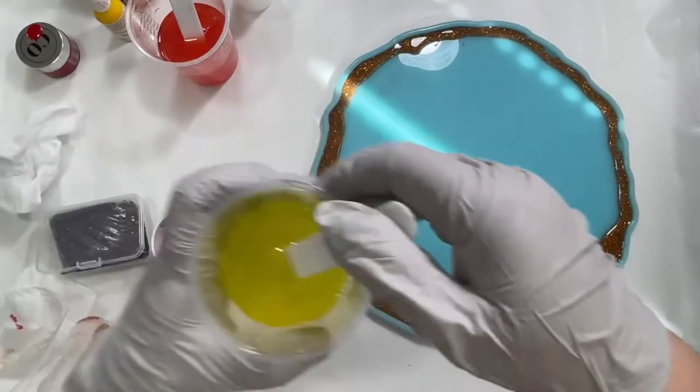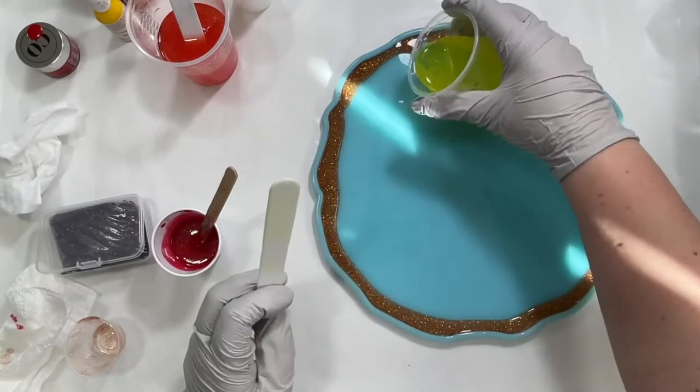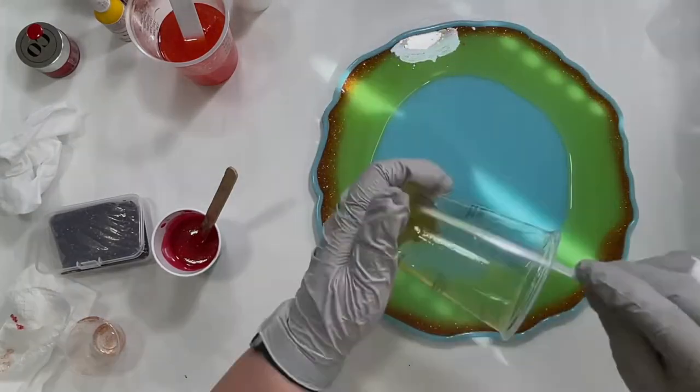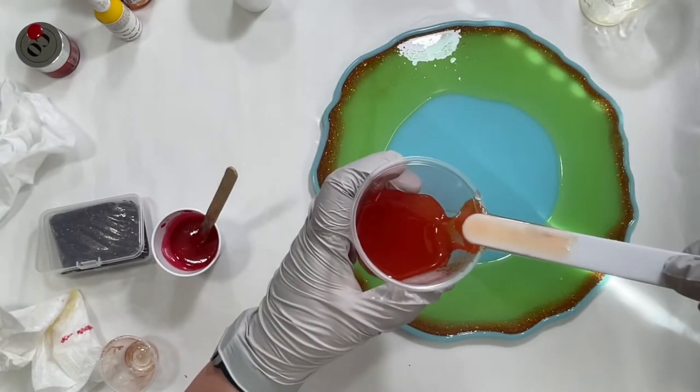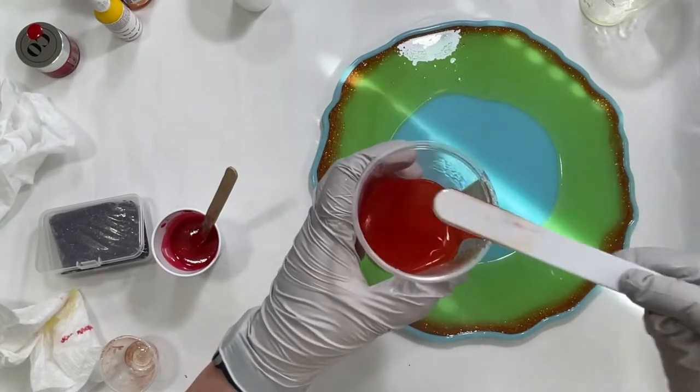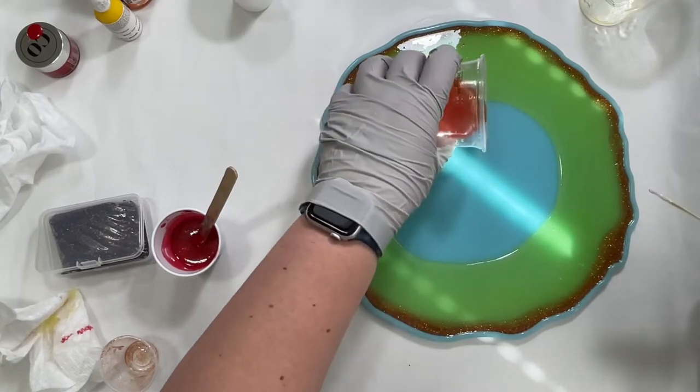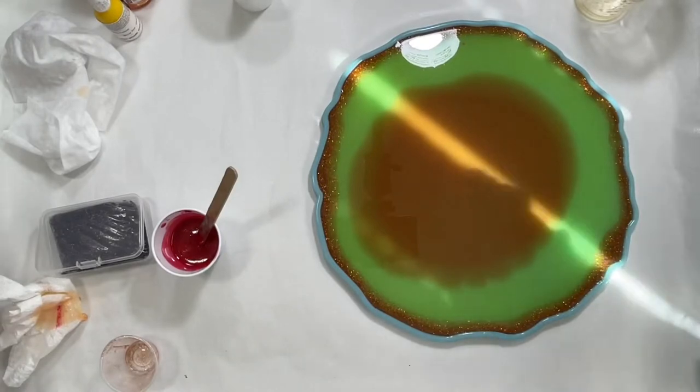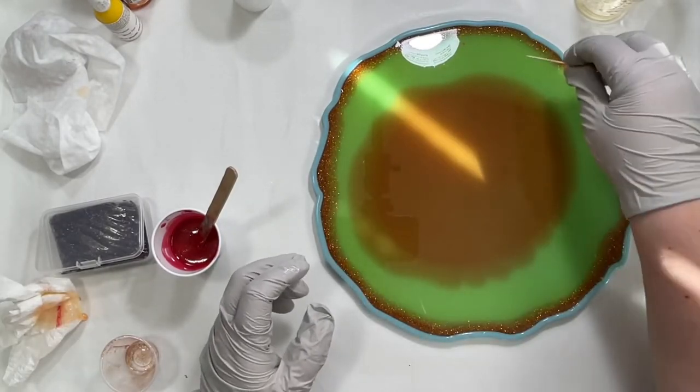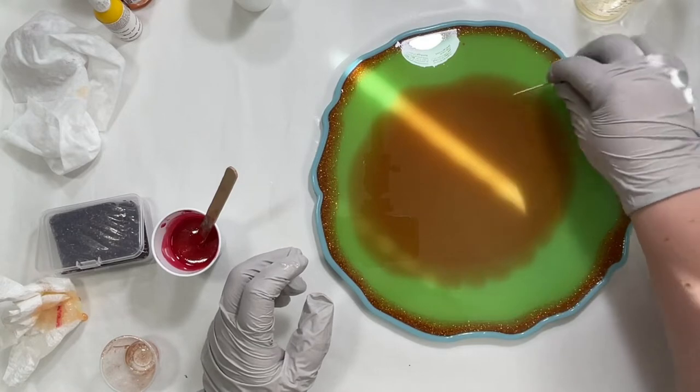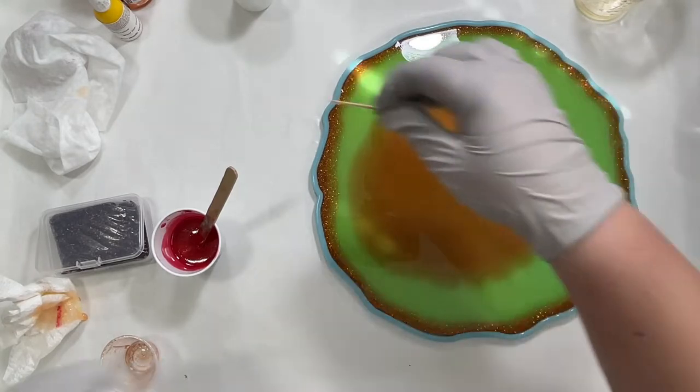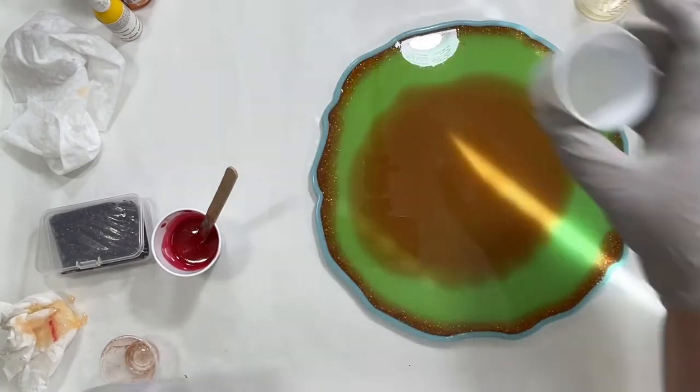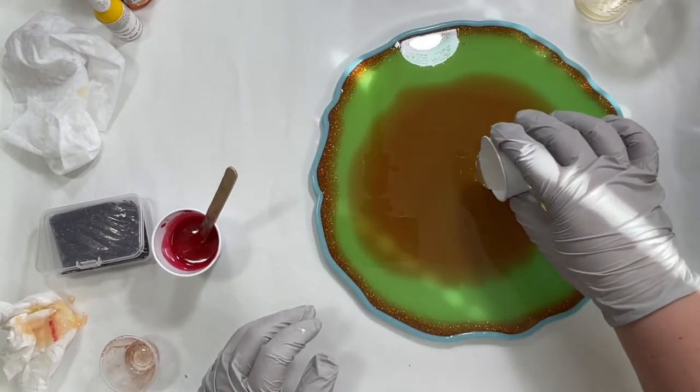Alright, so I'm going to start with the glitter. Okay, now I'm going to pour the yellow. Alright, now the orange. I'm really hoping that the yellow and orange blend together. Alright, now I'm going to pour the clear in the center, just push that orange out a bit.